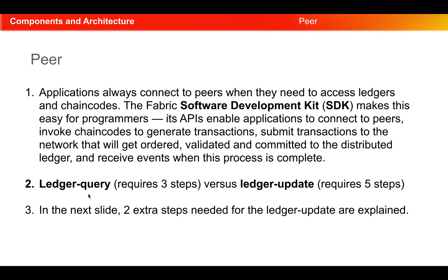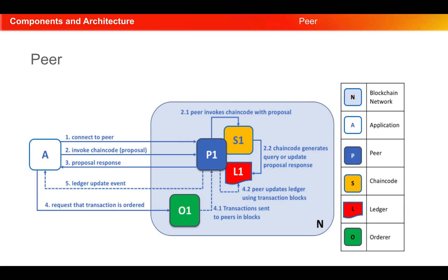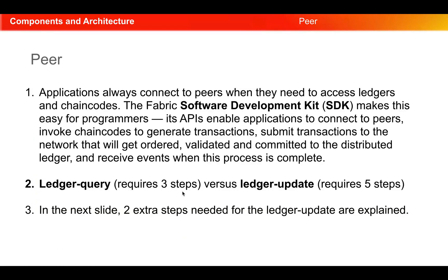There are two types of transactions. One is a ledger query transaction, which requires three steps, and the other is a ledger update, which requires five steps. Consider the blue box as the blockchain network. 'A' is an outside application that sits outside the network. We take P1 as the peer, S1 as the chaincode, L1 as the ledger, and O1 as the orderer.